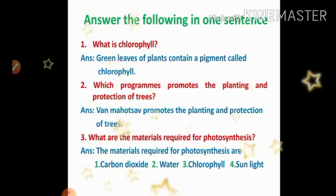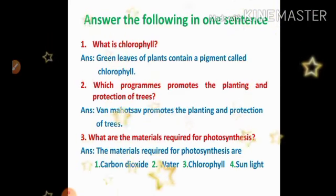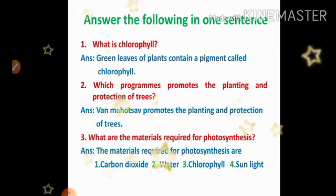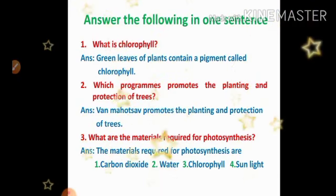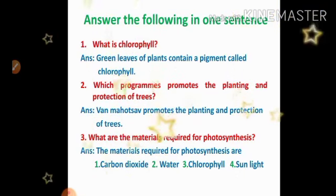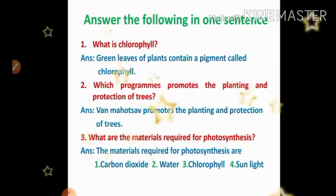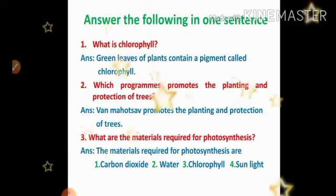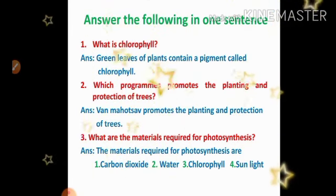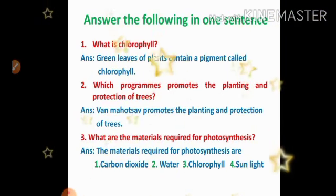Second question: answer the following in one sentence. Question one: what is chlorophyll? Answer: green leaves of plants contain a pigment called chlorophyll. Second one: which program promotes the planting and protection of trees? Answer: Van Mahotsav promotes the planting and protection of trees. Third one: what are the materials required for photosynthesis? Answer: the materials required for photosynthesis are carbon dioxide, water, chlorophyll, and sunlight.